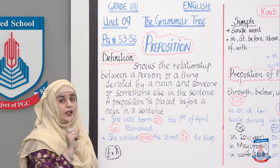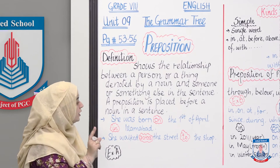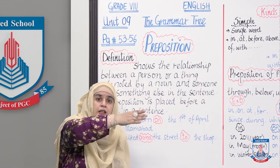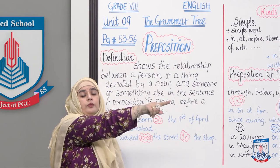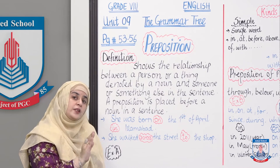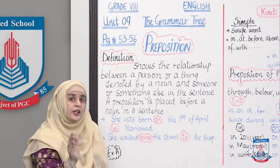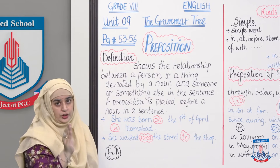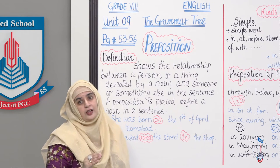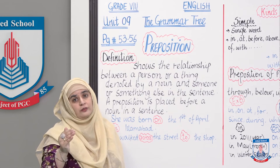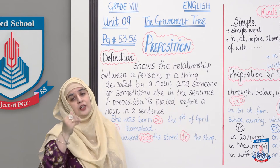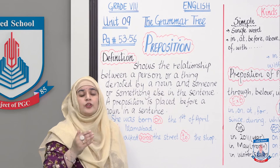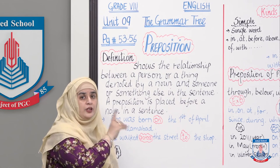Likewise, another example: 'She walked across the street to the shop.' Kis tarha us ne walk ki? Across the street — road cross karke. Kis taraf? To the shop. To us ki movement ki directions jo aapko denote kar rahi hain — joh word hai — woh prepositions hain. Kisi bhi subject ya object ki movement kis direction mein hai, kahan hai, kaisi hai — woh sab prepositions denote karte hain.